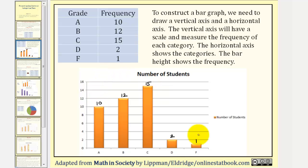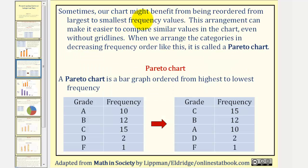Now let's talk about a Pareto chart. Sometimes our chart might benefit from being reordered from largest to smallest frequency. This arrangement can make it easier to compare similar values in the chart, even without grid lines. When we rearrange the categories in decreasing frequency order like this, it is called a Pareto chart.